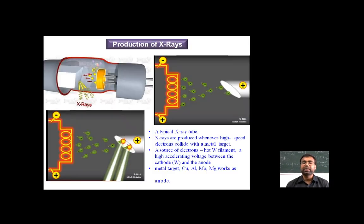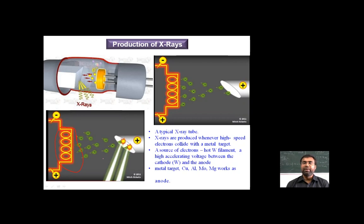X-rays are produced by a typical X-ray tube. X-rays are generated whenever high-speed electrons collide with a metal target. The source of electrons is a hot filament, and a high accelerating voltage is applied between the cathode and anode. Due to the high temperature and high voltage, the filament electrons are accelerated toward the metal target — copper, aluminium, or molybdenum — which acts as the anode.